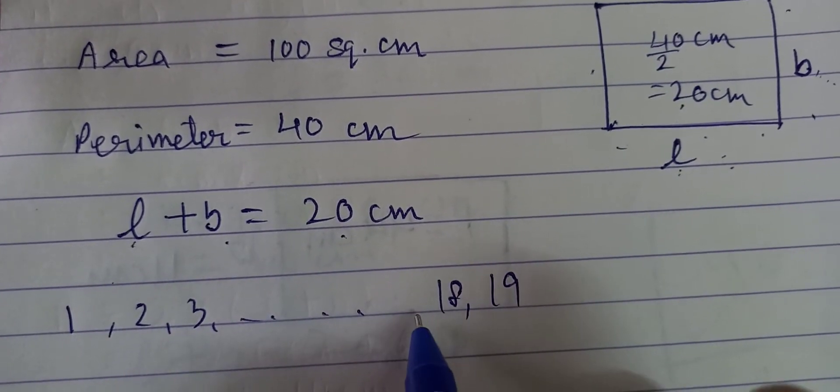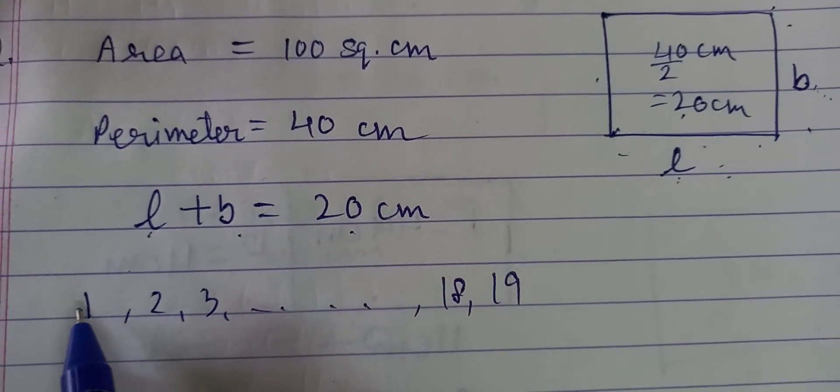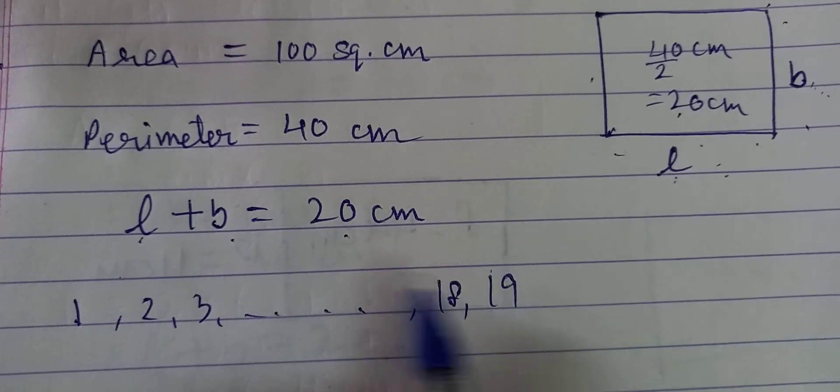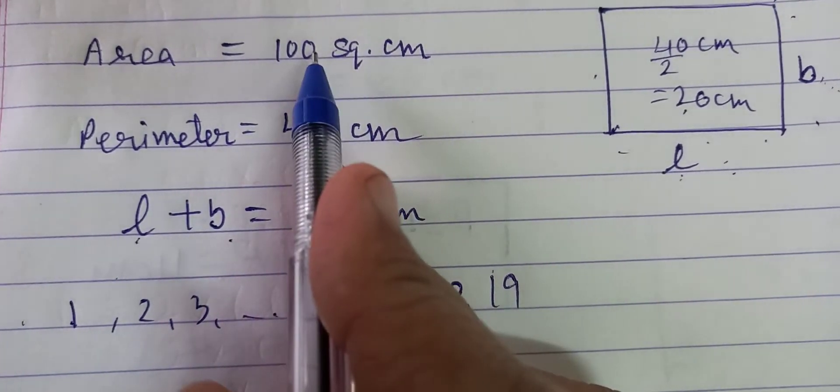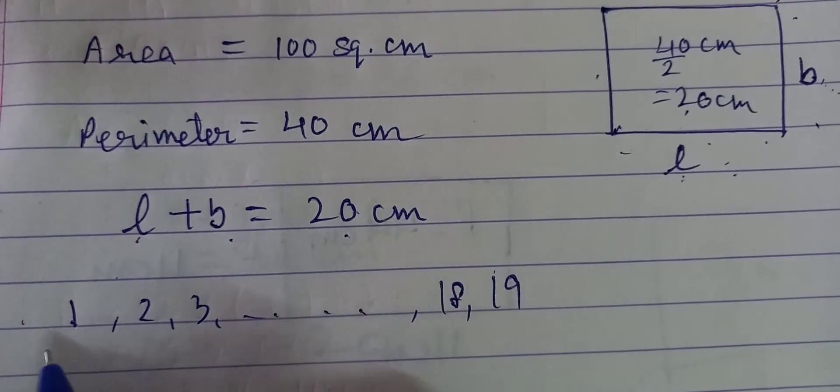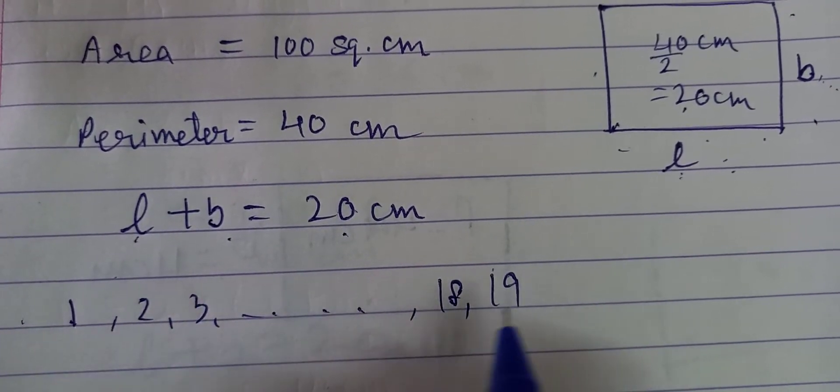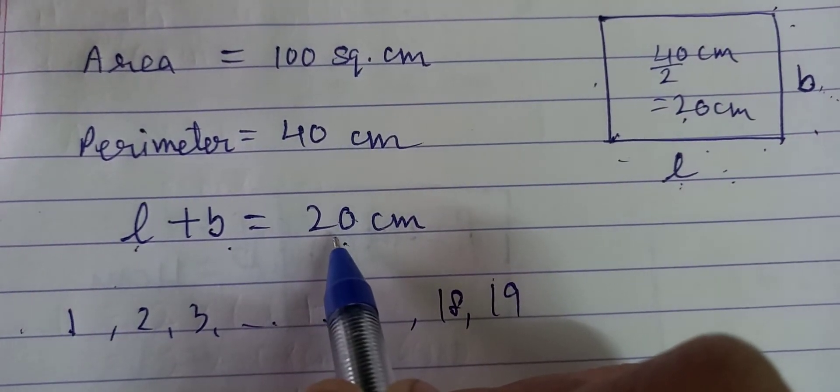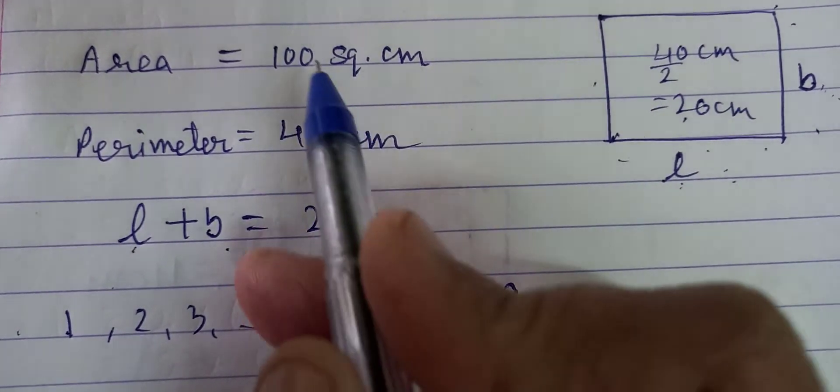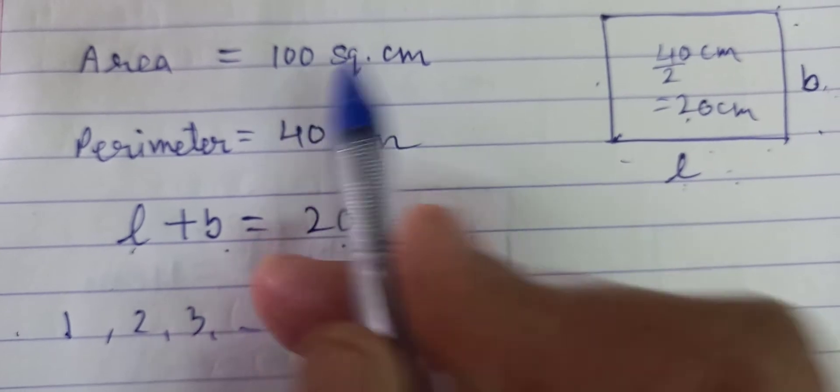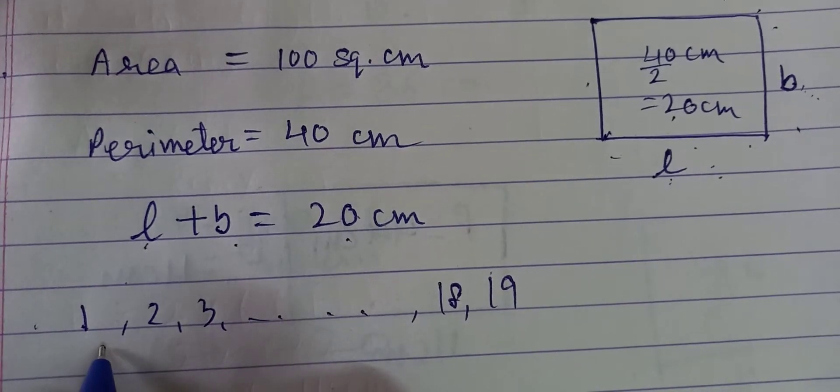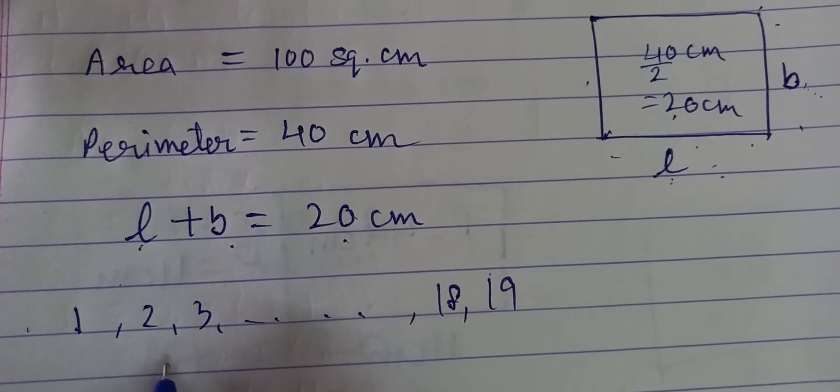18, 19 and so on. तो अगर हम 1 और 19 को add करते हैं, तब 20 आता है, पर इन दोनों को multiply करके 100 नहीं आ रहा. तो हमने ऐसे numbers ढूंढने हैं, इस पूरी list में, 1 से लेके 19 तक, जिनको add करके 20 आये, और उनको multiply करके 100 आये. क्योंकि इनका area क्या है? 100 square centimeter.